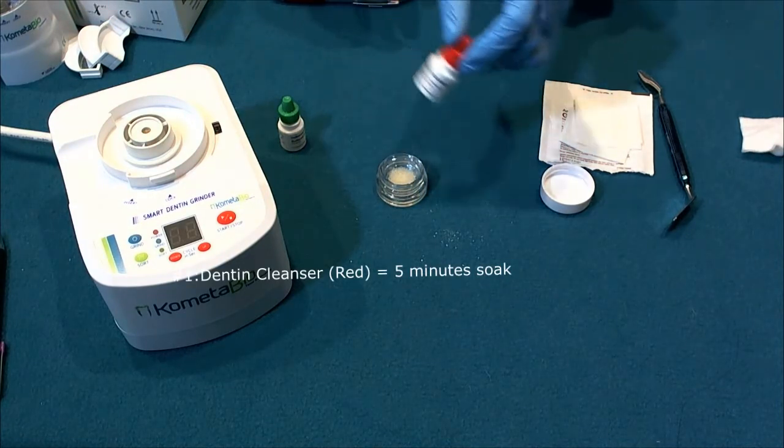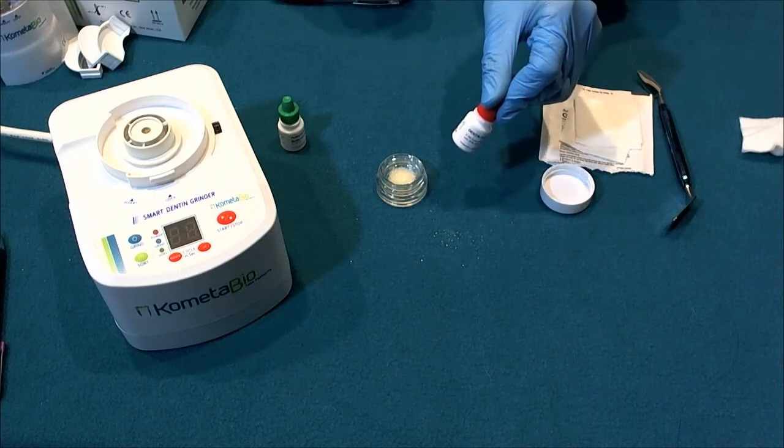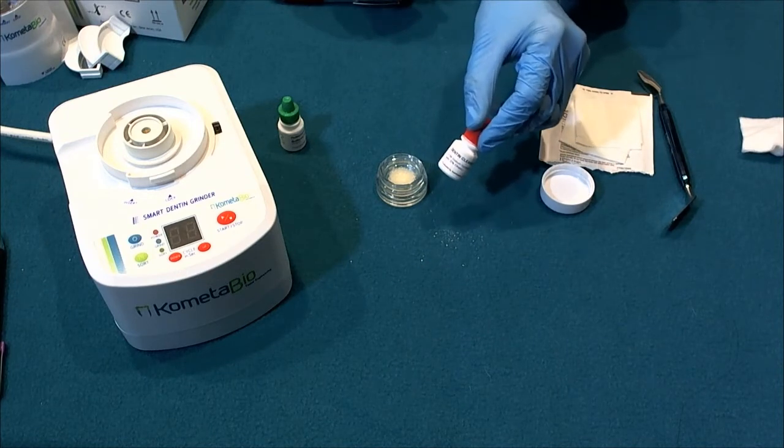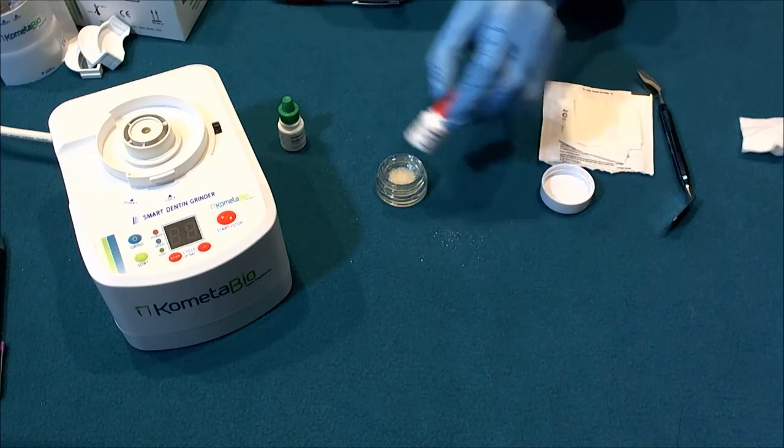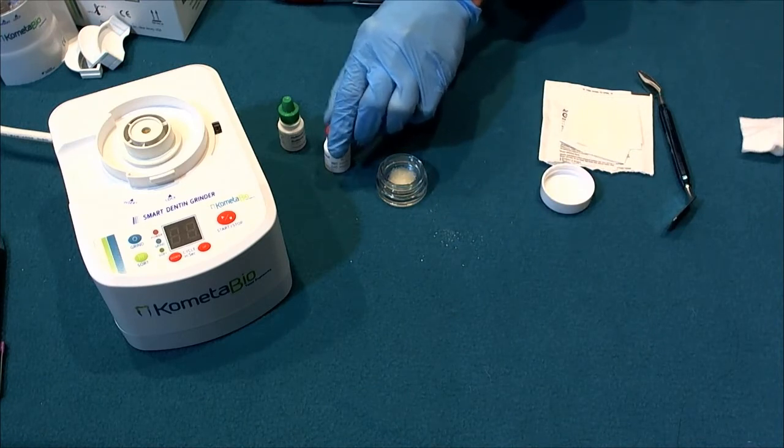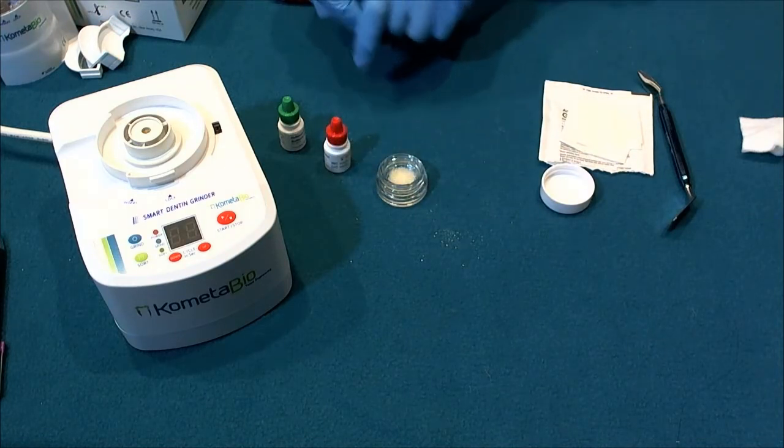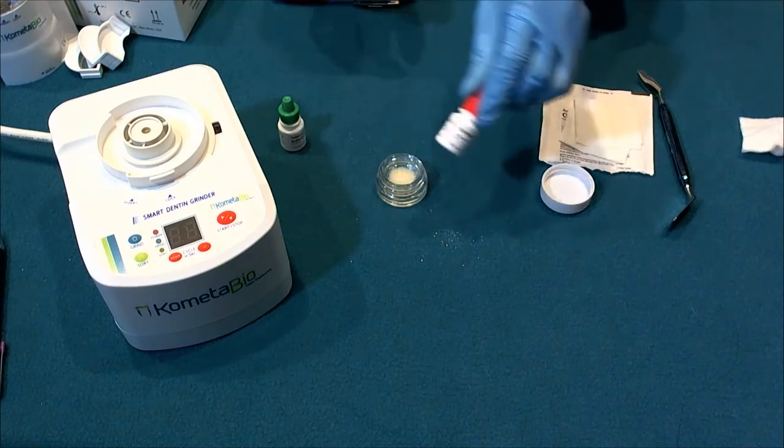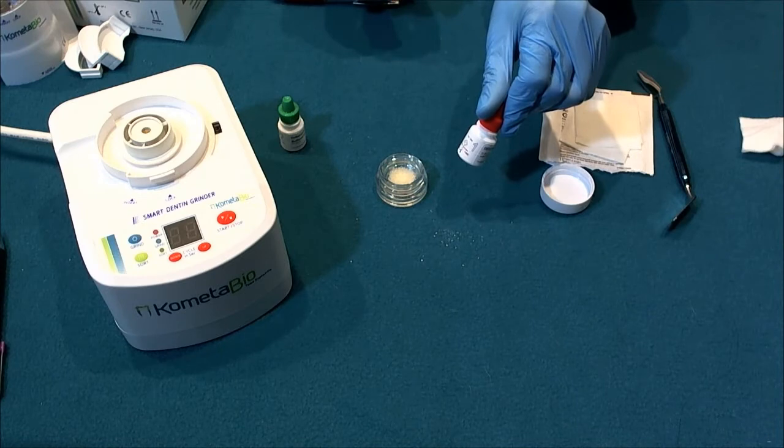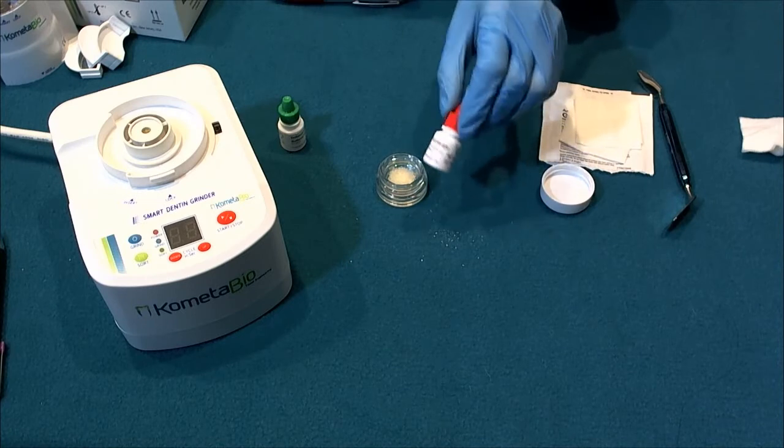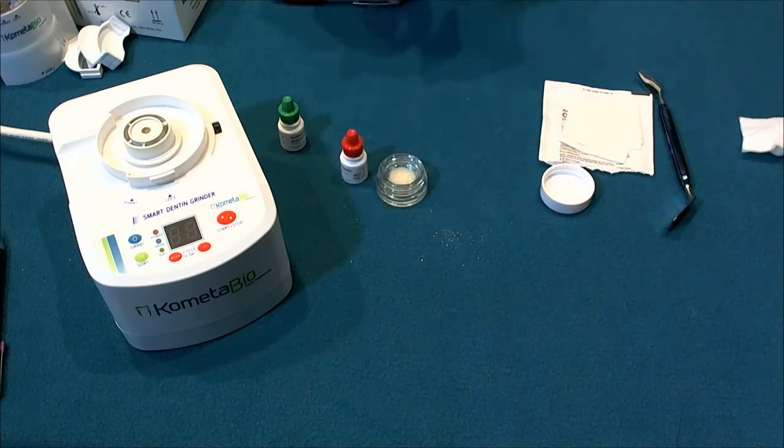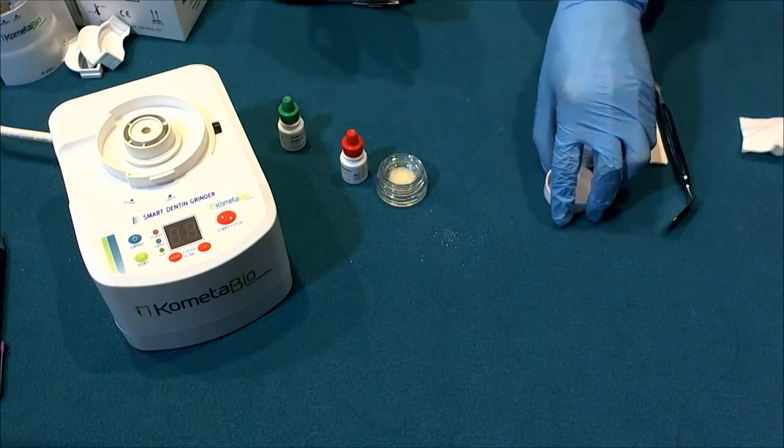What the dentin cleanser does, it will eliminate any organics that are on the top of the mineral, on the surface of the mineral. So anything like decay and caries and bacteria and basically anything organic is going to be gone after those five minutes. But the nice thing about it is that it's not going to penetrate the mineral, it's not going to dissolve the mineral. So we're still getting all the scaffold, the mineral scaffold, plus all the collagen fiber type one, BMPs and growth factors that are captured in the inside the mineral.